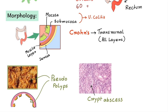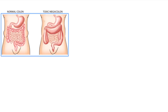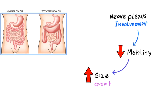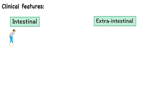In morphology we can also see toxic megacolon. In extreme cases, there is involvement of the nerve plexuses in the muscularis layer, resulting in decreased motility of the colon and an increase in size over time, giving rise to toxic megacolon.